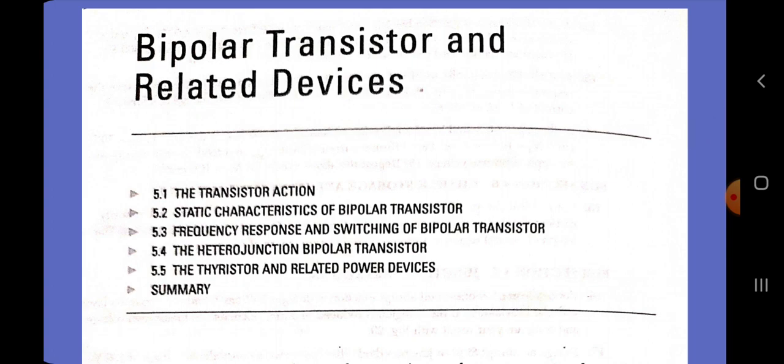The basic thyristor has three closely coupled PN junctions in the form of a PNPN structure. The device exhibits bistable characteristics and can be switched between a high-impedance off state and a low-impedance on state. The name thyristor is derived from the gas thyratron, which is a gas-filled tube with similar bistable characteristics. Because of the two stable states — on and off — and the low power dissipation in these states, thyristors are useful in many applications. We consider the physical operation of the thyristor and a few related switching devices, and their applications are briefly introduced.